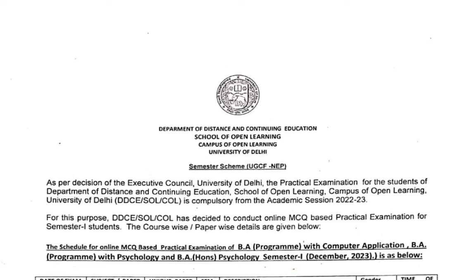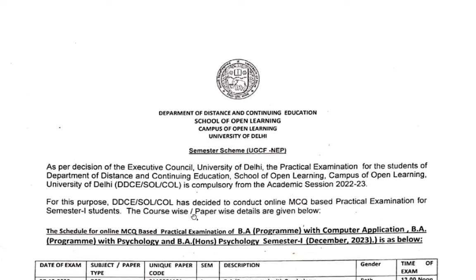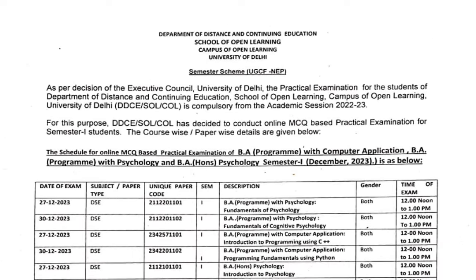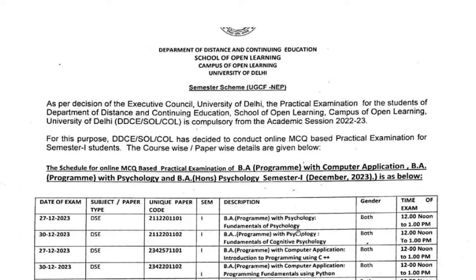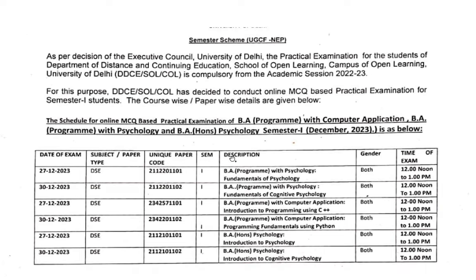Let's talk about semester 1. There are already many courses with internal assessments. The three courses are BA program with computer application, BA program with psychology, and BA honors psychology. In semester 1, practical exams will be held. The first paper is DSC — given to BA program with psychology as Fundamentals of Psychology — with a timing of 12 to 1, applicable for both male and female students.